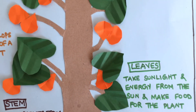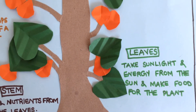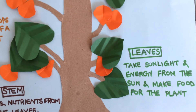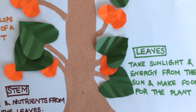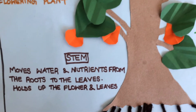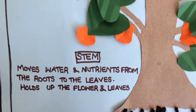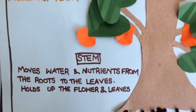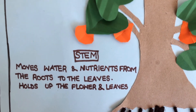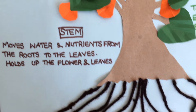Fruits are seed-bearing structures that develop from the ovary of a flowering plant. Leaves take sunlight and energy from the sun and make food for the plant. Stem.